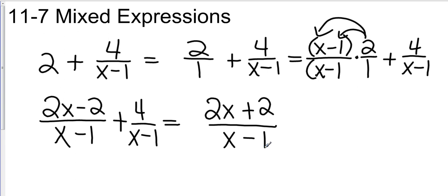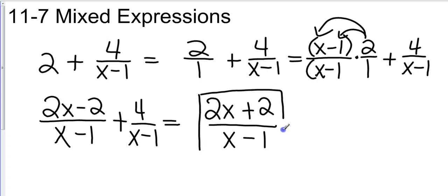Negative 2 plus 4 is positive 2, all over x minus 1. Now, you might look at that 2x plus 2 and say you can factor that — take a 2 out of it — and that's going to be x plus 1. But that's not going to help cancel anything on the bottom because we have an x minus 1. So we will just stop there: 2x plus 2 over x minus 1.